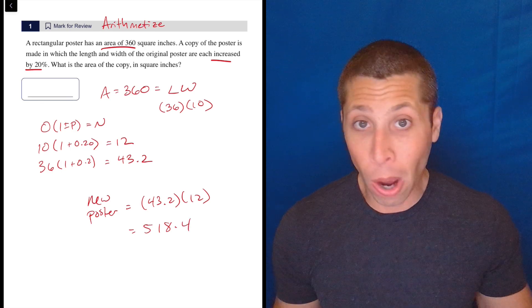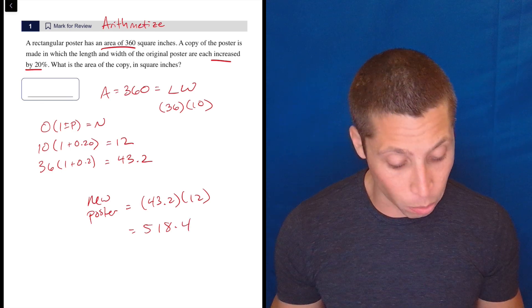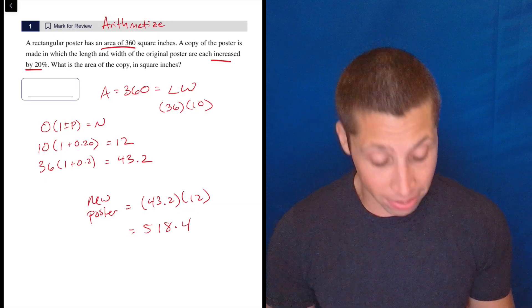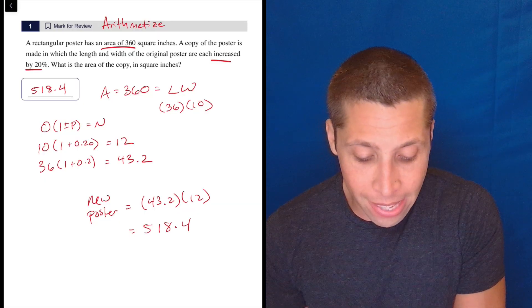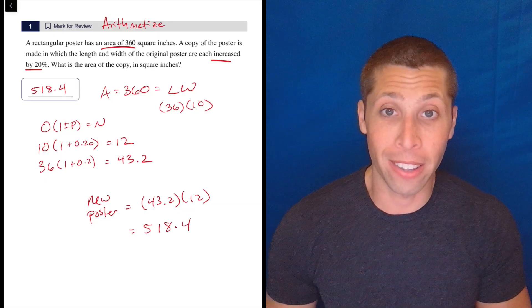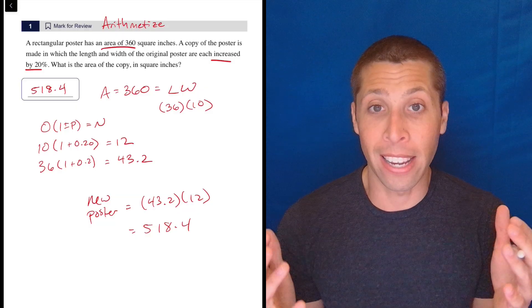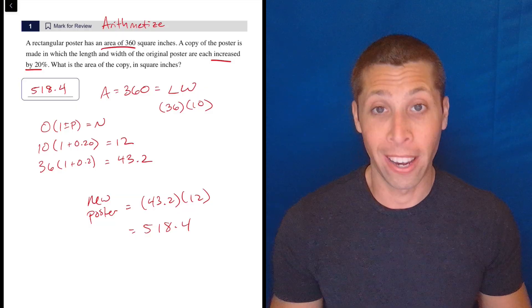518.4. Does it say to round? No, it does not. What is the area of the copy in square inches? So just keep it as it is. So 518.4 is an answer you can input into that spot. And it is the correct answer, the only correct answer.